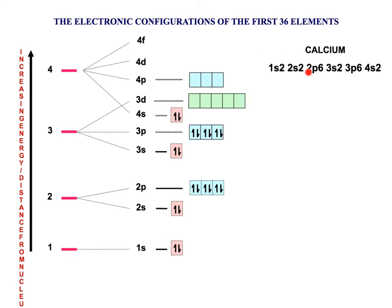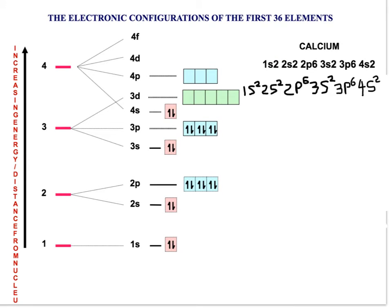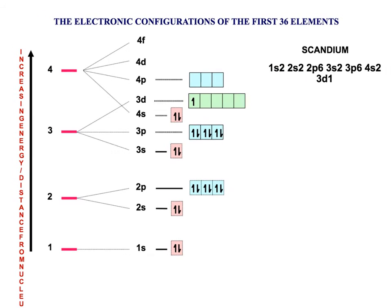Note that the numbers shown should all be subscript — little numbers. Whenever you're writing electronic configurations, they should be small superscript numbers. Scandium, titanium and vanadium fill up as you might expect.